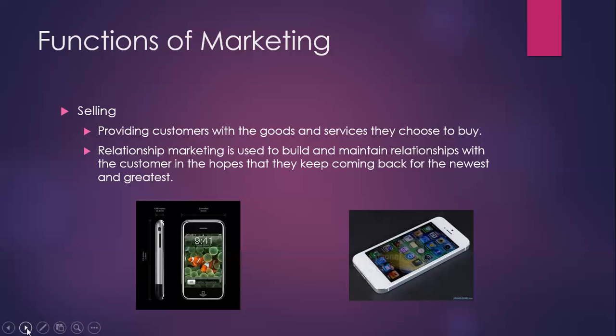Relationship marketing is another piece you'll hear about — it's when companies really try to build a relationship with you. They're not just trying to sell you one piece; they're trying to build a relationship so you come back over and over again. One simple example is Apple and the iPhone. They show the iPhone 1 on the left and the iPhone 5 on the right. They're trying to maintain a relationship so you keep coming back — people who buy the iPhone 5 probably had a 4, 3, and 2 before it. If you can maintain that relationship, you'll have a secure future for your business.